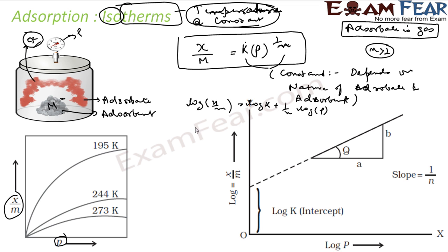So with this, the plot was done. This is log x by m. k is constant, so log k will also be constant. n is constant, so 1 by n will also be constant. It is log p. So this is nothing but y equals mx plus c. This is my constant c, this is my log k. You see, this is my intercept constant. And slope will be 1 by n. So this slope is nothing but 1 by n.